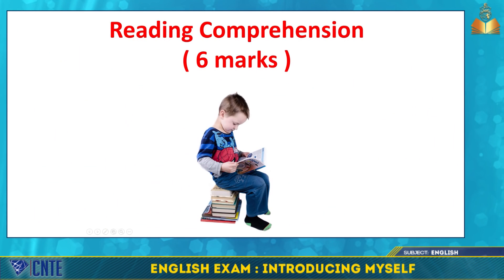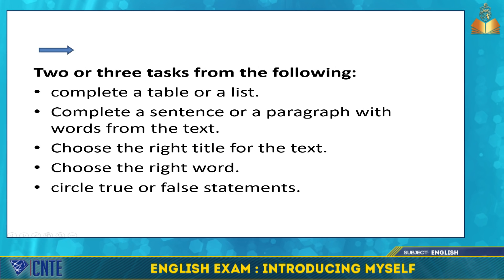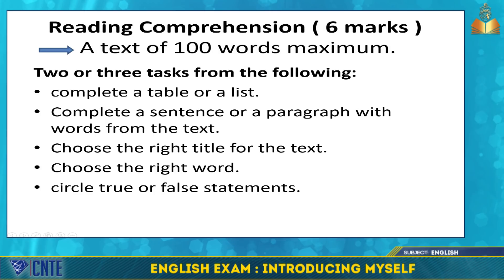The reading comprehension is over six marks. There is a text and two or three questions. In the text, there are 100 words maximum. The questions can be: complete a table or a list, complete a sentence or a paragraph with words from the text, choose the right title for the text, choose the right word, or circle true or false statements.